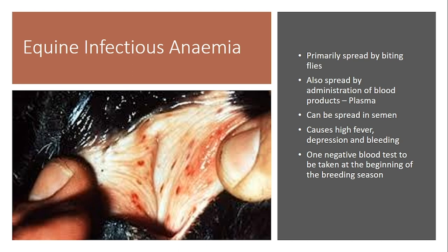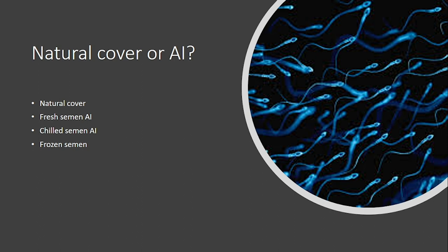Equine infectious anaemia is basically a disease spread by biting flies. It's not something we see in the UK, but it can potentially be spread in semen, which is why it's relevant here. As a by the way, it can also be spread by administration of blood products and plasma. It causes a high fever, depression, and internal bleeding. One negative blood sample is needed at the beginning of the breeding season to rule out the stallion carrying equine infectious anaemia.